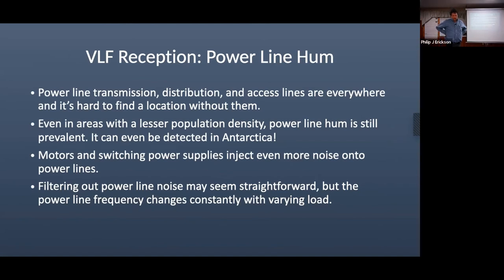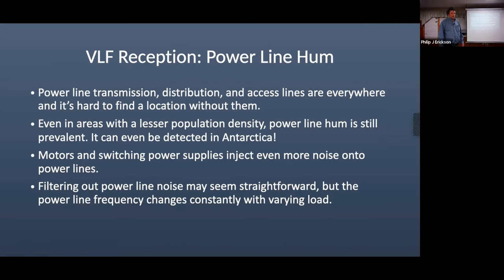Power line hum is the big challenge. It can even be detected in Antarctica — the hum propagates all the way along the field line from the northern hemisphere, so you can't escape it. My colleague Lou Lanzarotti at Bell Laboratories found coherent power line hum three Earth radii out in spacecraft wave data. Motors and switching power supplies switching at rates that generate tons of harmonic energy into this band are also problematic. The frequency of a switching converter changes when you load it more, so you're trying to track a moving target — challenging to filter.